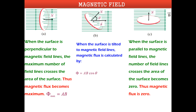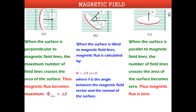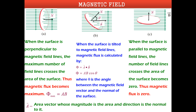If the area makes an angle with the magnetic field lines, the magnetic flux is between the maximum and zero. The equation for magnetic flux is Φ = A × B × cos θ, where A is area, B is magnetic field intensity, and θ is the angle between the magnetic field lines and the normal of the surface. The normal of the surface is any line perpendicular to the surface. Area is a vector quantity whose direction is the normal of the surface. Since this is a scalar product of two vectors, magnetic flux is a scalar quantity.